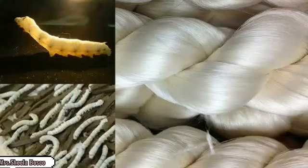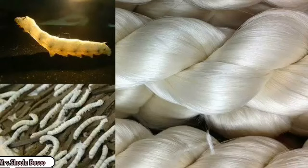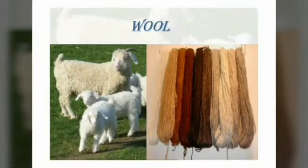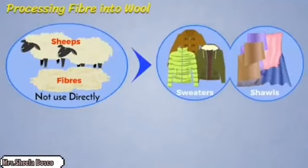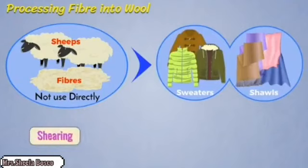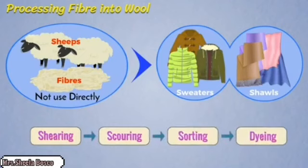This is the life history of a butterfly and how we get silk fabric. Now we will see how wool is converted into fiber. We look at the sheep — the outer covering of the sheep is called fleece, and it is used for making sweaters, shawls, and other items. There are four processes: shearing, scouring, sorting, and dyeing.